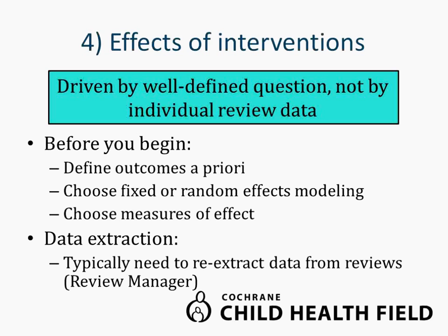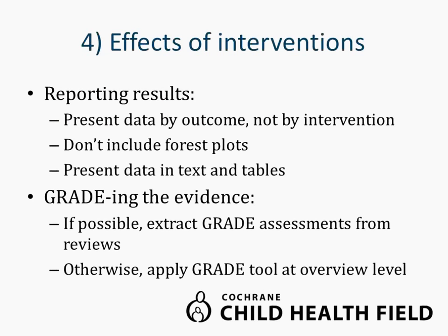If possible, we recommend reporting quality assessments as they're presented in each review, and the Child Health Field has been able to do this almost all of the time, even though it sometimes gets a little messy. If not possible, you can go back to the original trials and re-extract the quality assessments yourself — the advantage is that even though it takes more time, you'll often end up with a cleaner end product. The fourth part of the results is the effects of interventions section, where you present outcome data. Data extraction should be driven by a well-defined question and not by the individual review data. You can do this by defining your outcomes a priori, choosing in advance whether to use fixed or random effect modeling, and choosing in advance whether to present risk ratios or odds ratios, and mean differences or standardized mean differences.